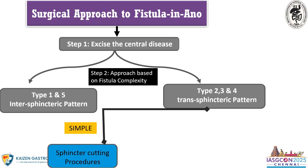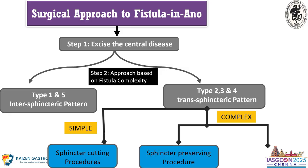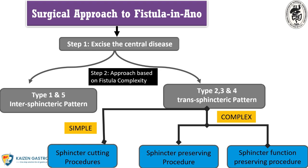Almost 30 to 35% of fistula cases are types 1 and 5 — no additional procedure needed beyond central disease excision. For types 2, 3, and 4 — transsphincteric patterns — we need to think further. Type 2 is low transsphincteric, of which 40% are simple and can go straight to sphincter-cutting. Only those with low transsphincteric associated Crohn's or anterior female fistula go for seton. Types 3 and 4 — anterior and posterior high transsphincteric — are 20 to 25% of patients and require sphincter-preserving or sphincter function-preserving procedures.